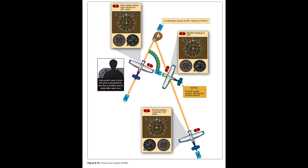Certified Checkpoints. Airborne and ground checkpoints consist of certified radials that should be received at specific points on the airport surface or over specific landmarks while airborne in the immediate vicinity of the airport. Locations are published in the A/FD. Should an error in excess of ±4 degrees be indicated through use of a ground check, or ±6 degrees using the airborne check, IFR flight shall not be attempted without first correcting the source of the error. No correction other than the correction card figures supplied by the manufacturer should be applied. If a dual system VOR (units independent of each other except for the antenna) is installed, one system may be checked against the other — the maximum permissible variation between the two indicated bearings is 4 degrees.